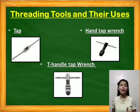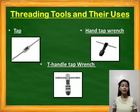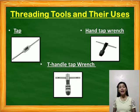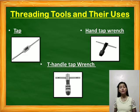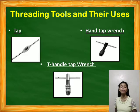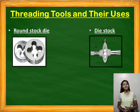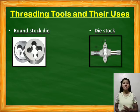Threading tools and their uses: tap is used for cutting inside threads into a hole. Hand tap wrench refers to the handle used for threading inside threads with a tap. The T-handle tap wrench refers to a handle with adjustable folding devices, also used like drilling for a tap to cut inside threads, especially with smaller sizes. Round stock die is used for cutting external threads, available in any size and specification. Die stock refers to the handle that fits over the round die to secure it and facilitate turning.